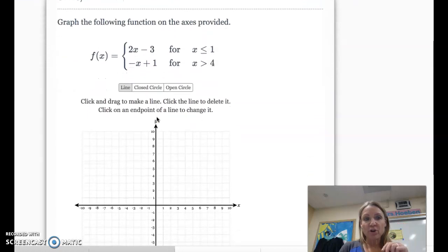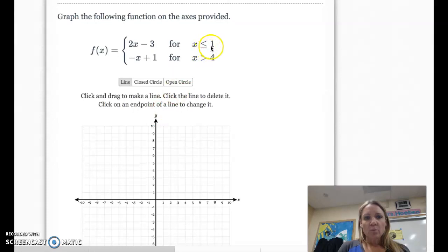So let's do the top one first. And we're going to start at positive, or we're going to come from negative infinity up to positive 1. So if we plug a 1 in here, 2 times 1 is 2, 2 minus 3 is negative 1. So we should have a point at 1, negative 1.